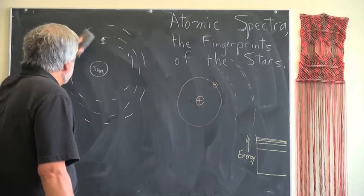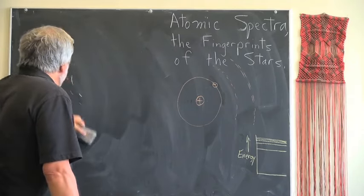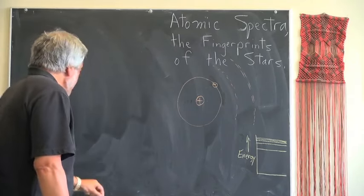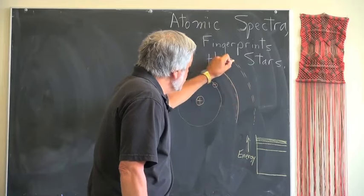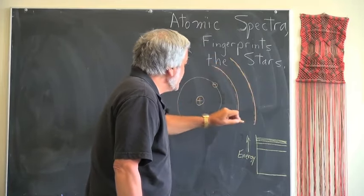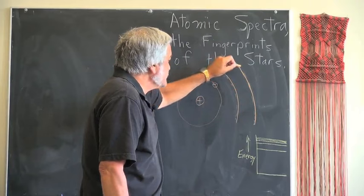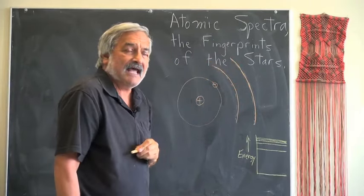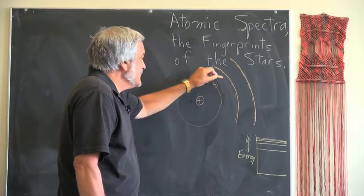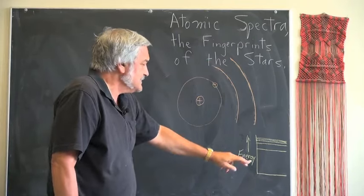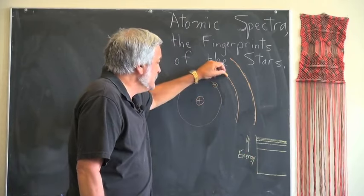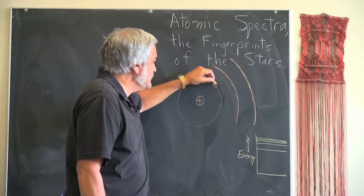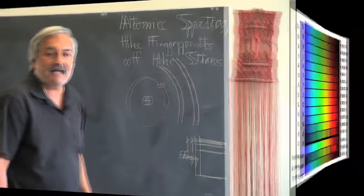That is not the case with atoms. In atoms, there are very specific discrete levels that allow the electrons to reside in. And those discrete levels give rise to discrete energies corresponding to the change in those levels within the atom.